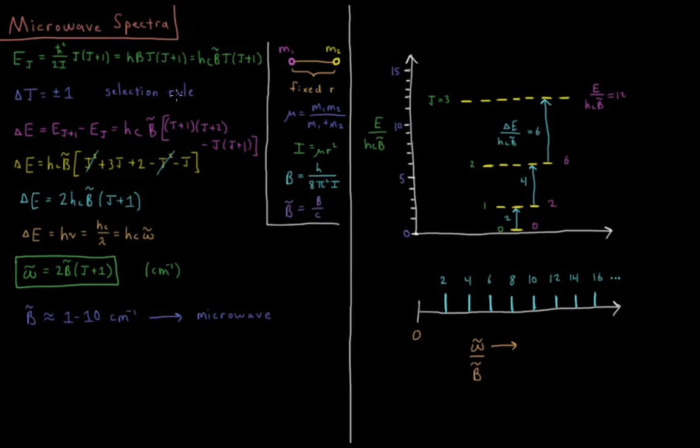The selection rule, the rule that tells us how the quantum number j is allowed to change when we absorb a photon, delta j is equal to plus or minus 1. Plus 1 for absorption, minus 1 for emission.